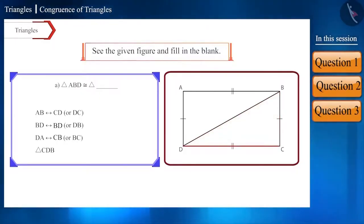Friends, if we start with DC, then the next side should start with C, while the next side here is BD or DB. That is why we started from CD rather than DC and said that triangle CDB will be congruent to triangle ABD.